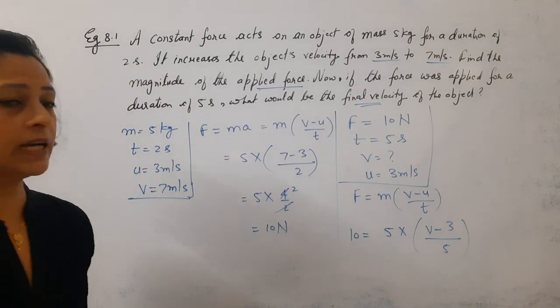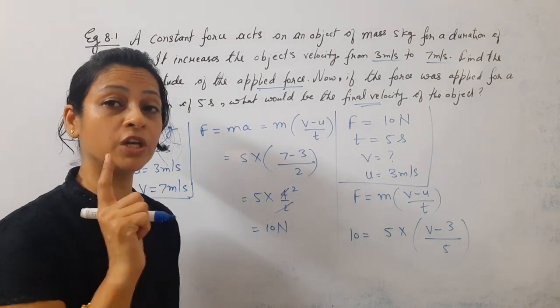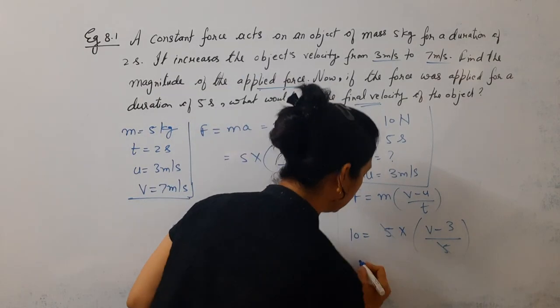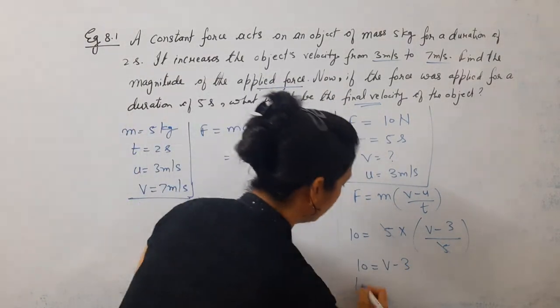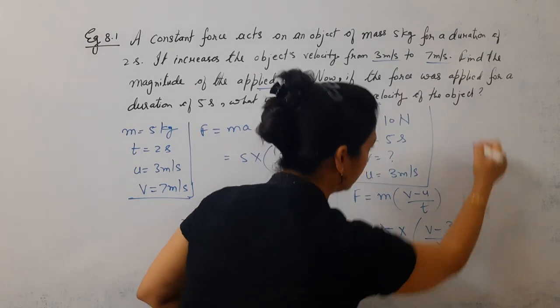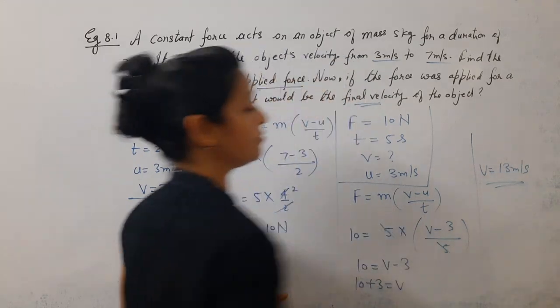We need to find V. What will be the final velocity if we apply that force for a duration of 5 seconds? 5 cancels, 10 equal to V minus 3. Changing sides, plus 3. So V comes out to be 13 meter per second. This is the final velocity of the object.